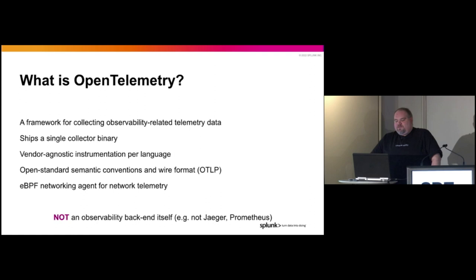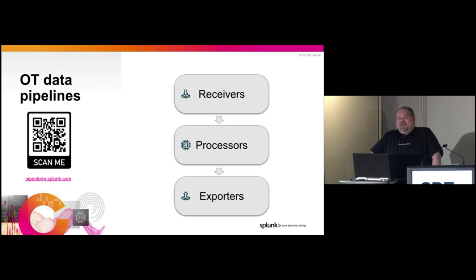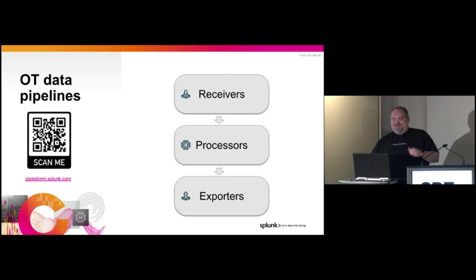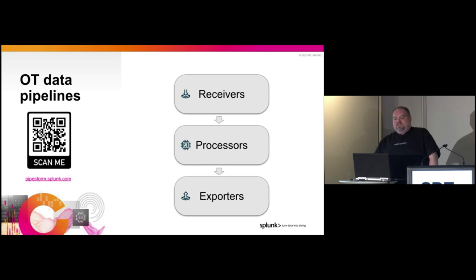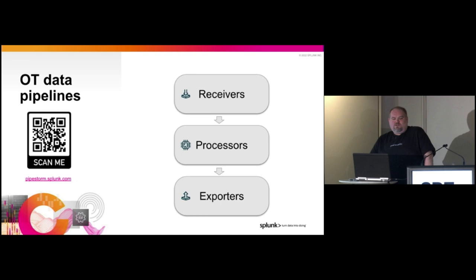OpenTelemetry is a system of pipelines at its heart. A pipeline is a way to get data from one place to another. You have receivers, processors, and exporters. Receivers take data from some platform or application and accept it — there are many different formats for ways that things emit metrics into the OpenTelemetry pipeline. Then they go through a processor that can manipulate them. For example, you can redact things if you are emitting sensitive data in your metrics. You can also use processors to do things like sampling.